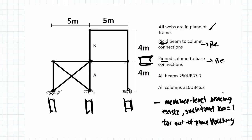There's also a note here where it says that the member level bracing exists such that the KE or effective length is the fully effective L.